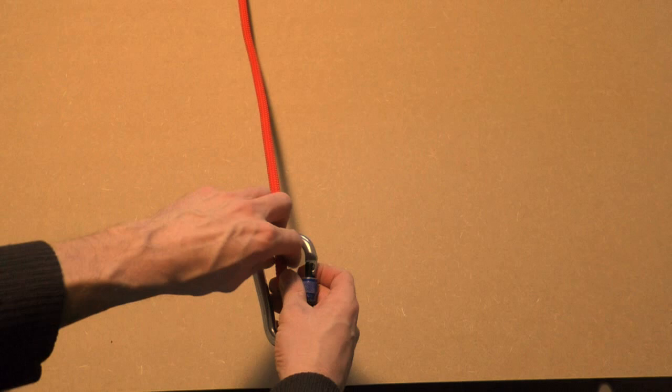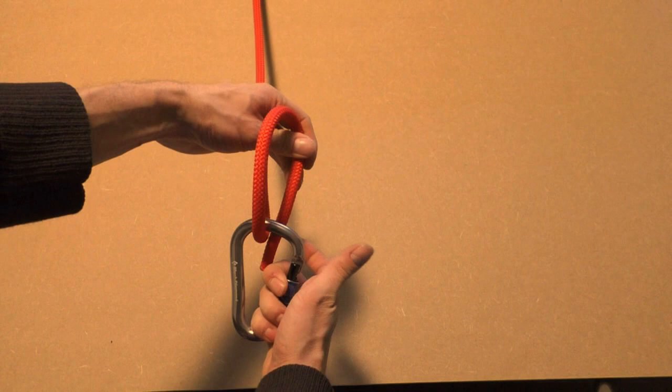Today we are tying the anchor hitch or anchor band. Go through the carabiner with the working end of the rope to form a coil. Come back around for a second coil.